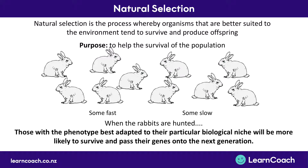Once hunting carries on, a bunch of the slower rabbits will end up being killed, so there are only faster rabbits left. Because these faster rabbits are the ones that produce offspring and breed together, it's likely those offspring are going to be faster as well. On average, rabbits get faster and therefore they're more likely to survive — that's how natural selection helps the survival of a population.